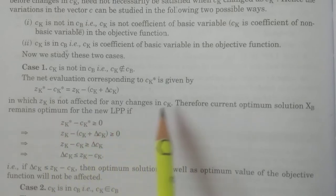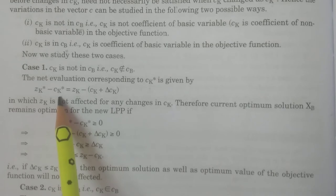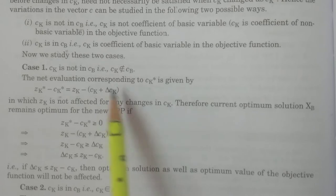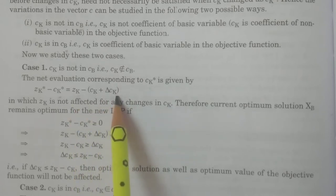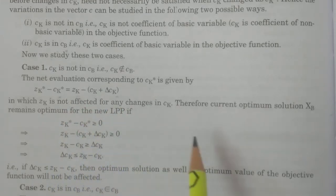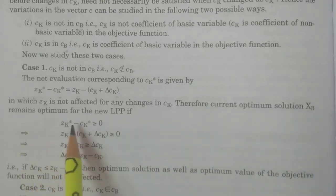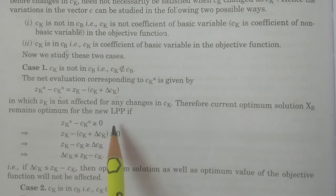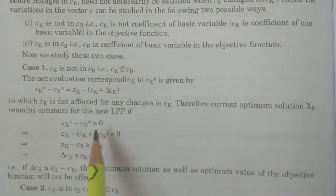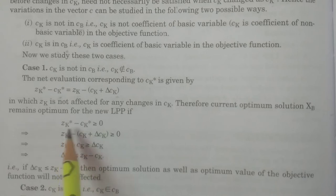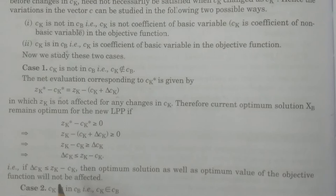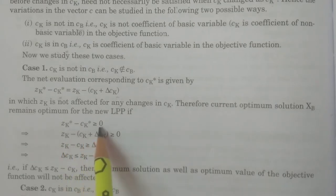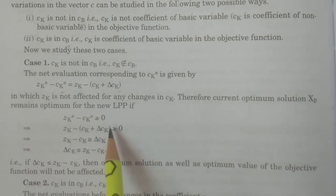Only ck is going to be changed, so the change is ck* = ck + delta ck. Therefore, zk* - ck* = zk - (ck + delta ck). The current optimum basic feasible solution xB remains optimum for the new LPP if and only if zk* - ck* ≥ 0. Only provided this is greater than or equal to 0 do all net evaluations become greater than or equal to 0. We are proving under which condition this is satisfied.